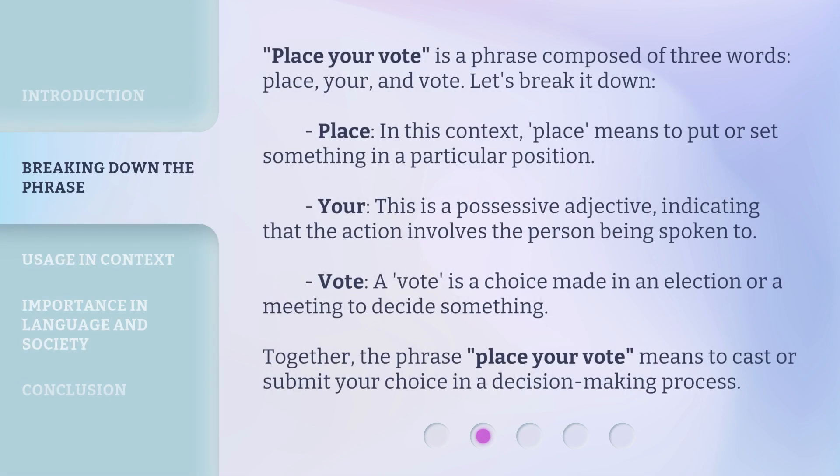'Place your vote' is a phrase composed of three words: place, your, and vote. Let's break it down. 'Place,' in this context, means to put or set something in a particular position. 'Your' is a possessive adjective, indicating that the action involves the person being spoken to. 'Vote' is a choice made in an election or a meeting to decide something. Together, the phrase 'place your vote' means to cast or submit your choice in a decision-making process.